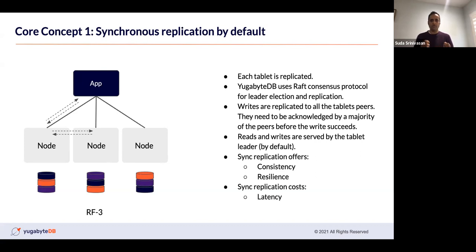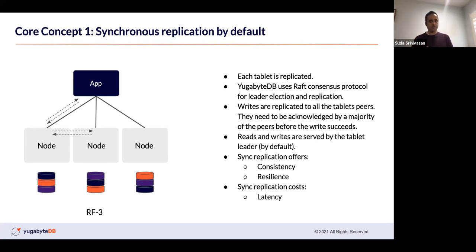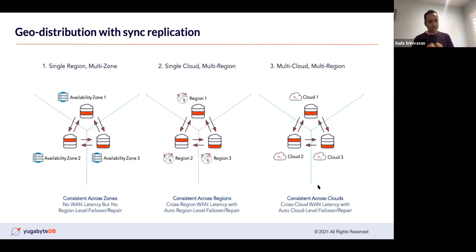A majority of peers must acknowledge before the write is sent back. Reads and writes are served by the tablet leader by default. For writes, it is always served by the tablet leader — this is the synchronous replication process. Synchronous replication means that in the critical path of the actual write operation, data is being replicated. This ensures consistency and resilience: if a node goes down, you still have access to the latest version of that data. You can deploy nodes in different availability zones of a region, or across different regions in what we call a stretch cluster.